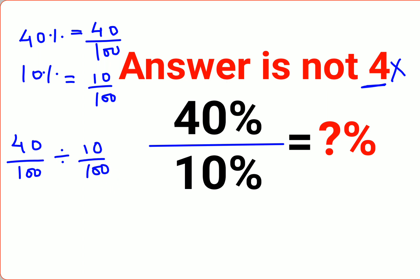Now whenever you have division, you need to follow the rule of KCF. K stands for keeping the first fraction as it is, C stands for changing the division sign to multiplication, and F stands for flipping.